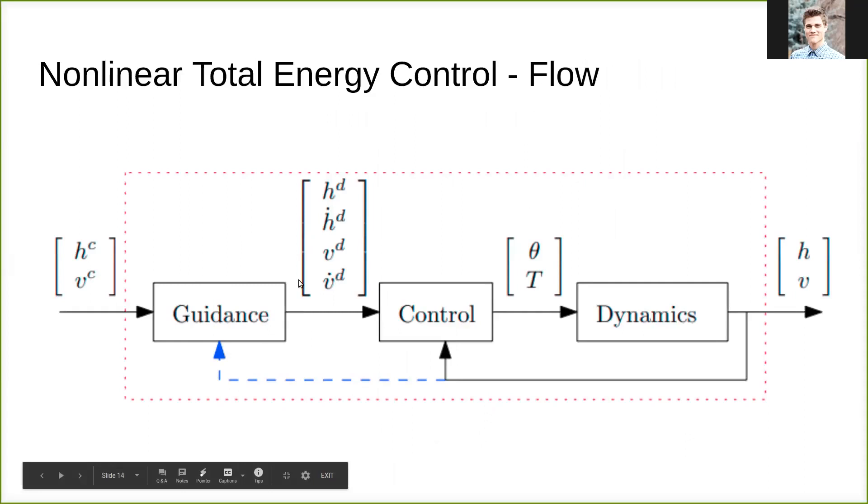So this takes us to the general flow of nonlinear total energy control, where you have a commanded height or altitude and a commanded airspeed, which is fed into a guidance model, which will output our desired height and velocity and their derivatives, which are intermediate desired terms instead of our end commanded terms. These are fed into our controller, which we've just stated, which give our theta command and our thrust command, which are fed into our dynamics to get the control we desire.